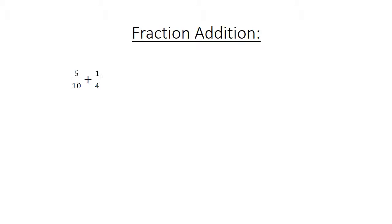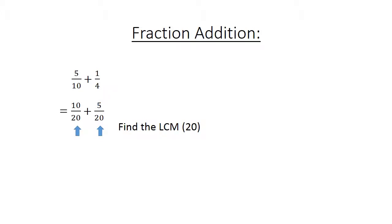Fraction addition: 5 over 10 plus 1 over 4. Find the lowest common multiple. 10 over 20 plus 5 over 20 equals 15 over 20, which equals 3 over 4.